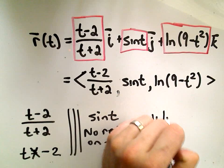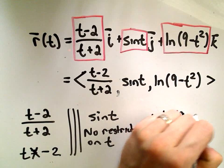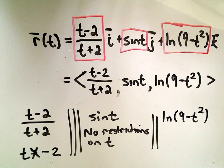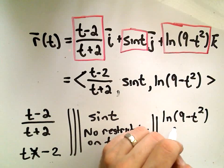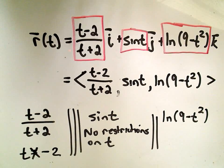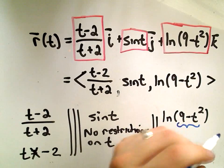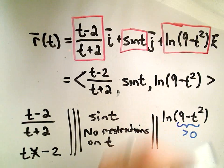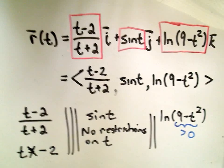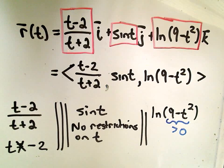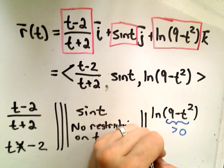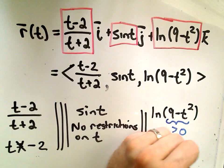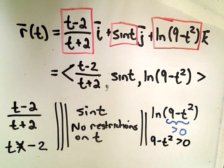Now I have to look at the natural logarithm of (9-t²). Remember, for a natural logarithm, the stuff on the inside of the logarithm has to be something strictly greater than 0. So what that means is I'm gonna have to solve the inequality 9-t² greater than 0.